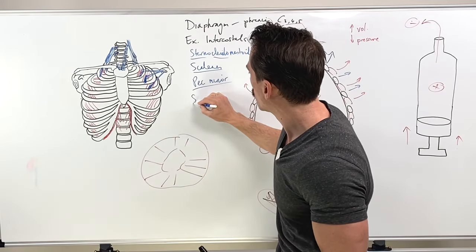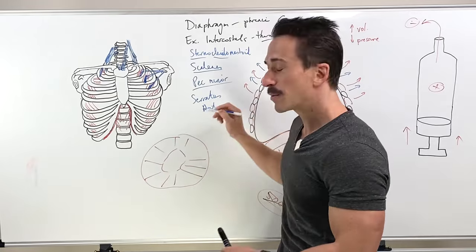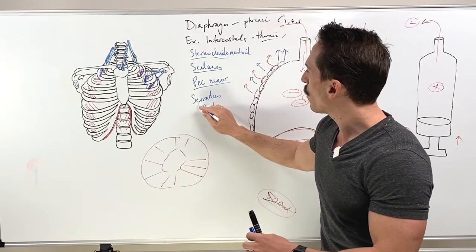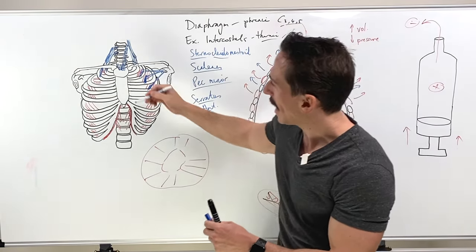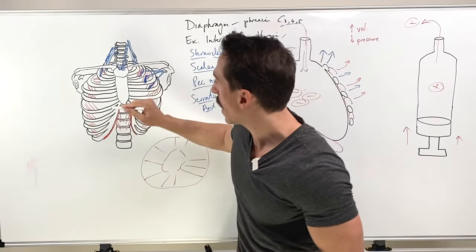If we then have a look at serratus anterior, and serratus posterior also plays a role here, but serratus anterior. So serratus anterior, upper eight ribs on the lateral side of the upper eight ribs, you've got the origin of this muscle.